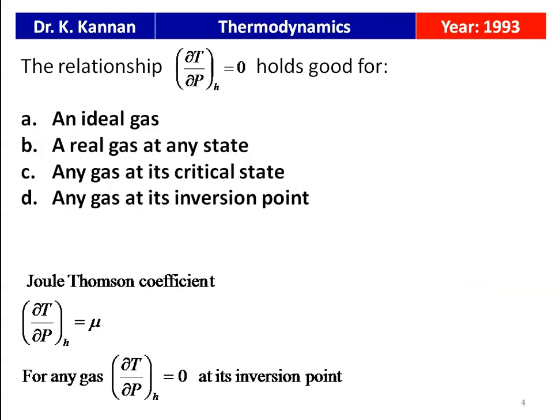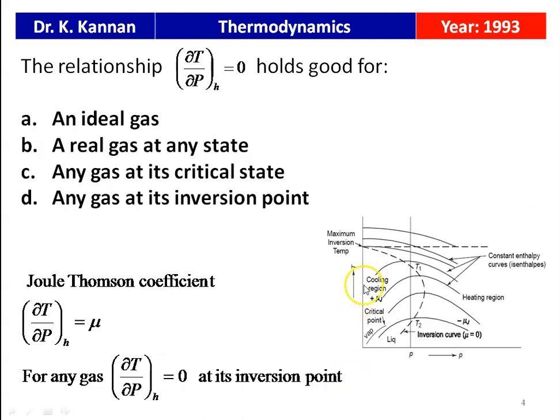∂T/∂P at constant enthalpy equals μ, which is defined as the Joule-Thomson coefficient. For any gas, ∂T/∂P at constant enthalpy equals 0 at its inversion point. On the P-T diagram, the locus of all the maximum points on the constant enthalpy curves is called the inversion curve. Along the inversion curve, ∂T/∂P at constant enthalpy equals 0 — the slope equals 0. So the equation holds good for any gas at its inversion point. Option D is the correct answer.